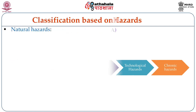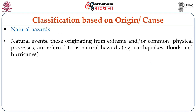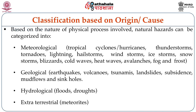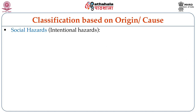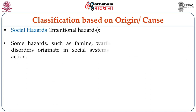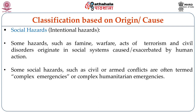Natural hazards are mostly natural phenomena over which humans have no control — for example, geological hazards such as earthquakes, meteorological hazards such as tropical cyclones, and hydrological hazards. Social hazards are intentional hazards: some hazards such as famine, warfare, acts of terrorism and civil disorders originate in social systems caused or exaggerated by human action. Some social hazards such as civil or armed conflicts are often termed complex emergencies or complex humanitarian emergencies.